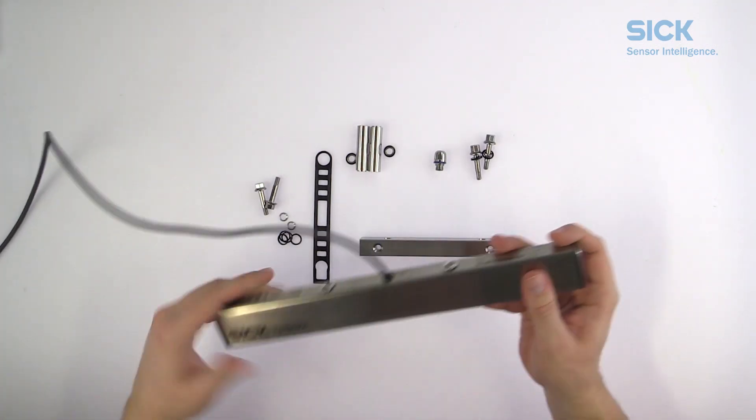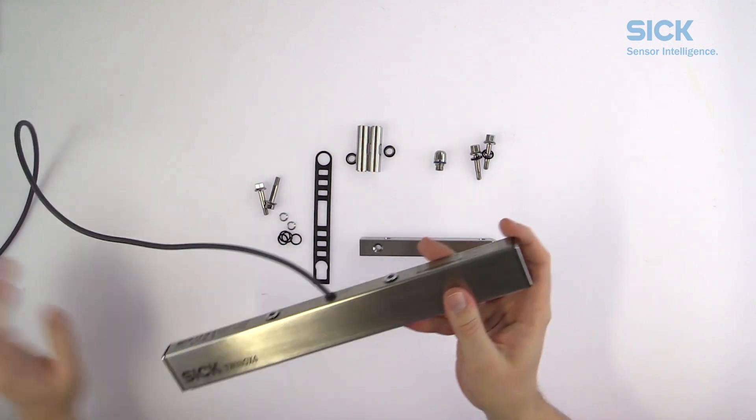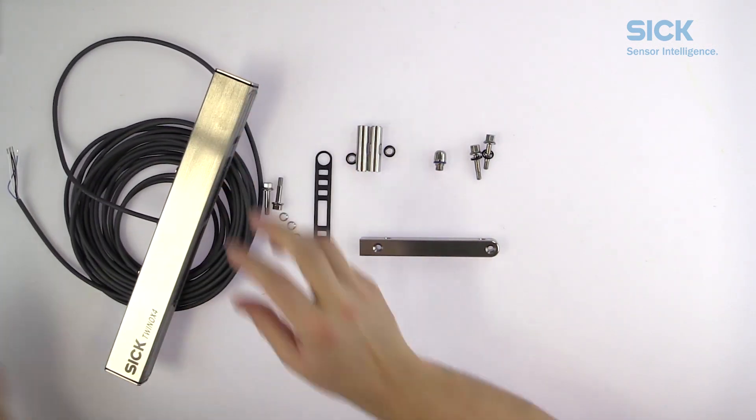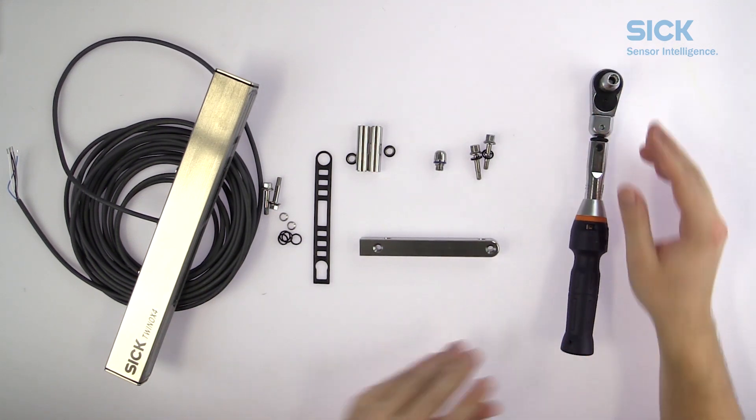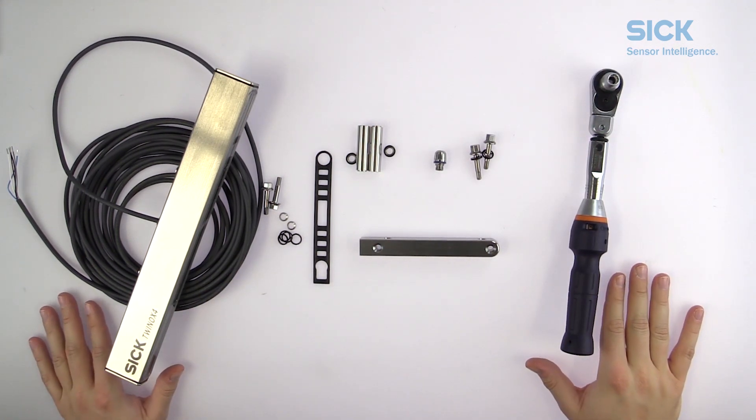Now all you need is a Twinox 4 stick and a torque wrench and you're all set to mount the bracket to your Twinox 4. How this is done we are showing in the next video. See you later!